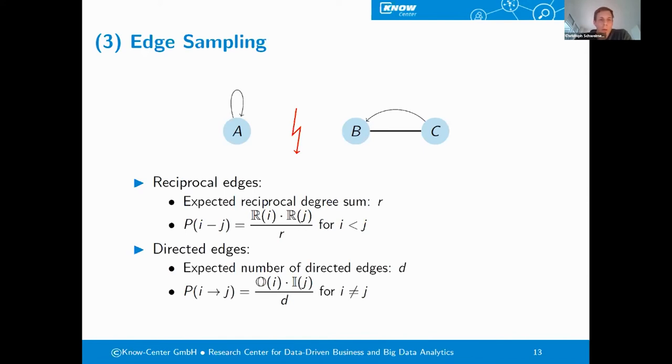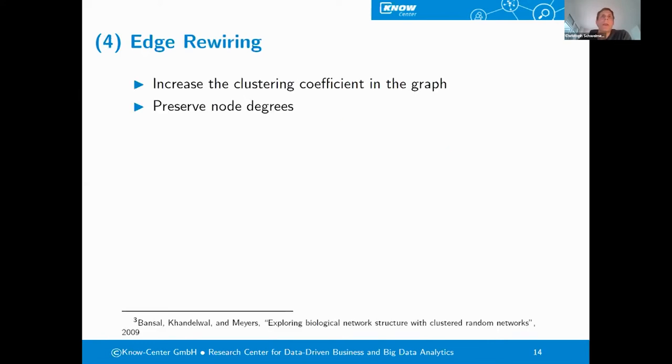At this point, we already have sampled a simple directed social network graph. But we have seen in the analysis, which I will also come to in a little bit, that the average clustering coefficient is way lower than in the crawled graphs. So, to increase the clustering coefficient, we apply an edge rewiring procedure. Our idea is also that we want to preserve the node degrees of the graph that we have already created.